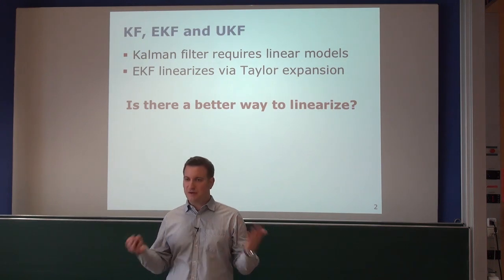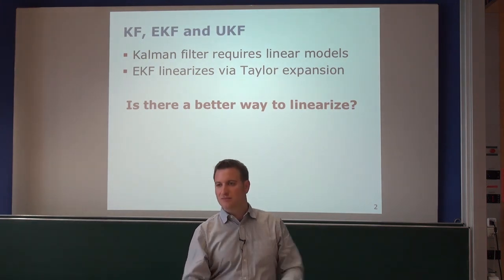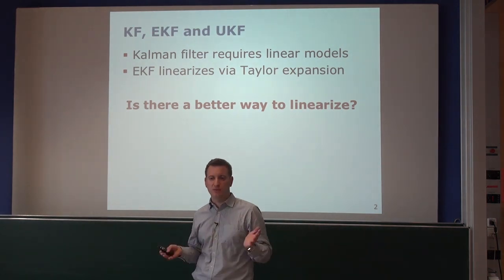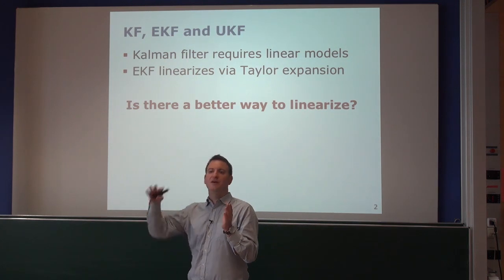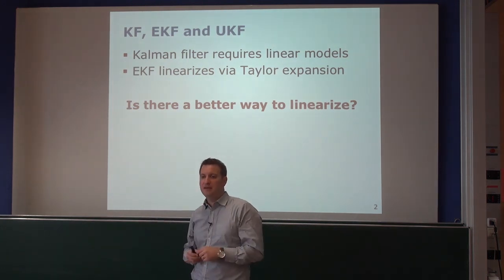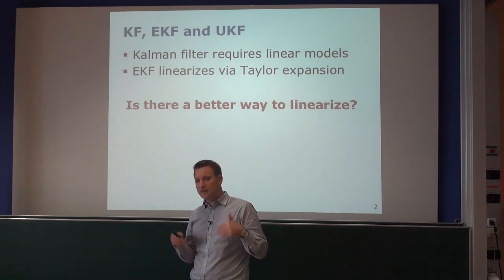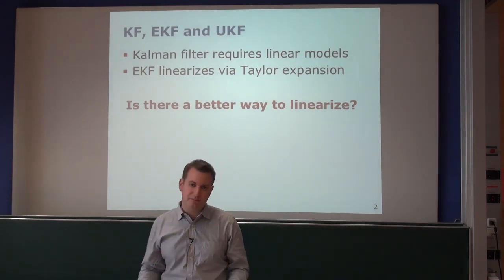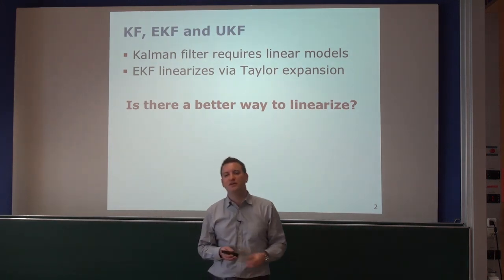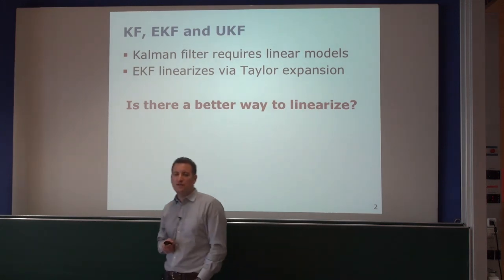What you want to do is: you have a Gaussian distribution, you want to push it through some nonlinear function, and then approximate the result with a Gaussian again. What we currently do is linearize the function, obtain the mapping, and the result is Gaussian. But there are better ways to do that if we think about the approximation quality of the resulting Gaussian distribution.